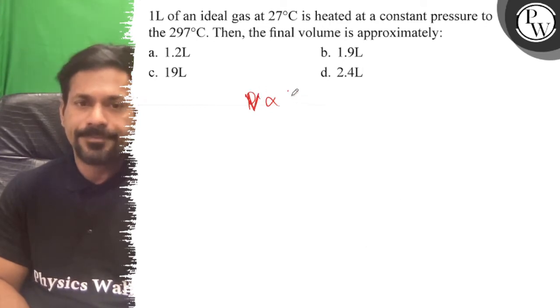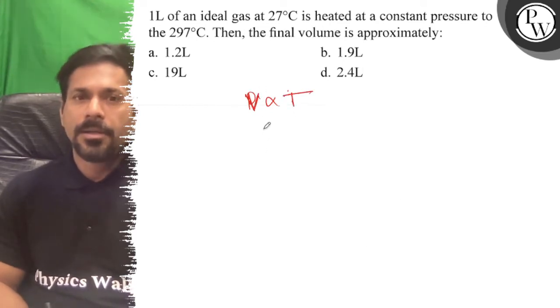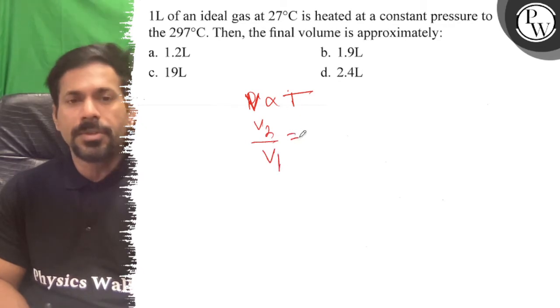Okay, so V2 upon V1 is equal to T2 upon T1. T2 is 297.